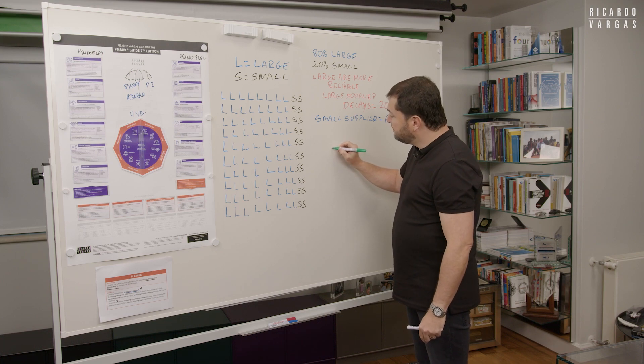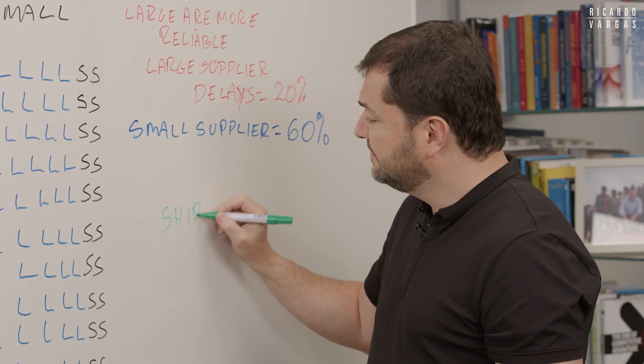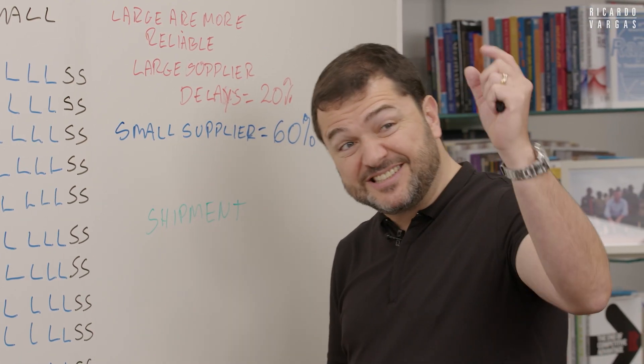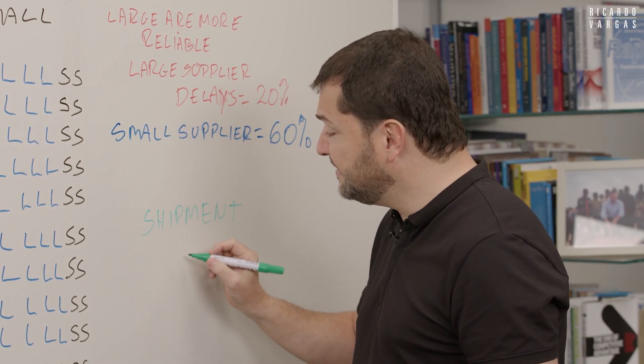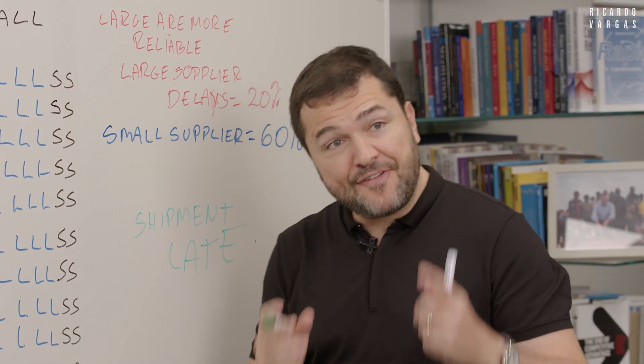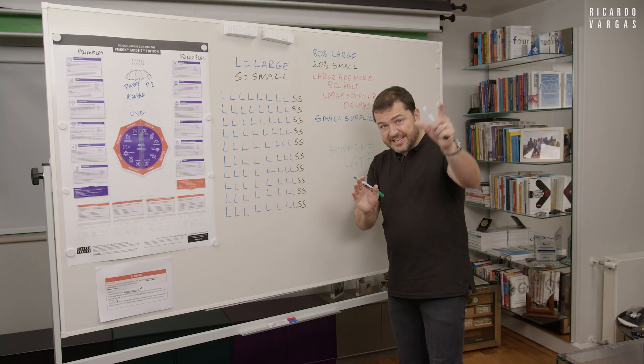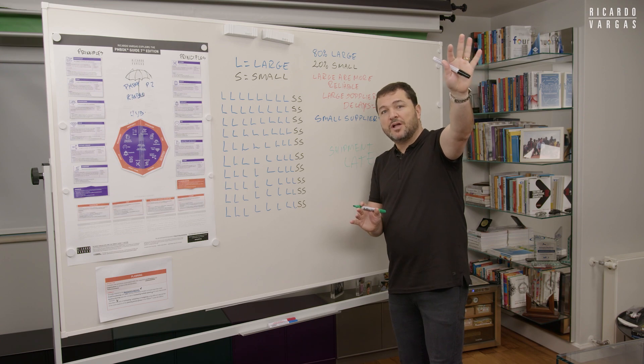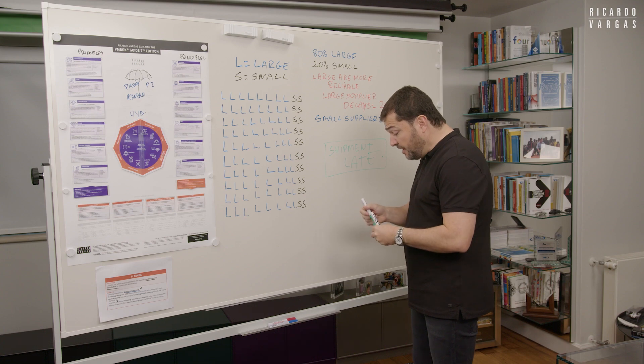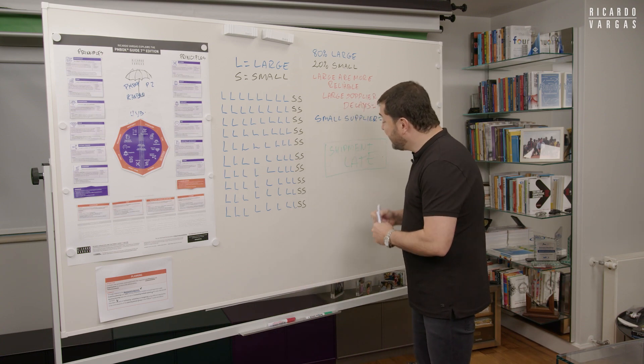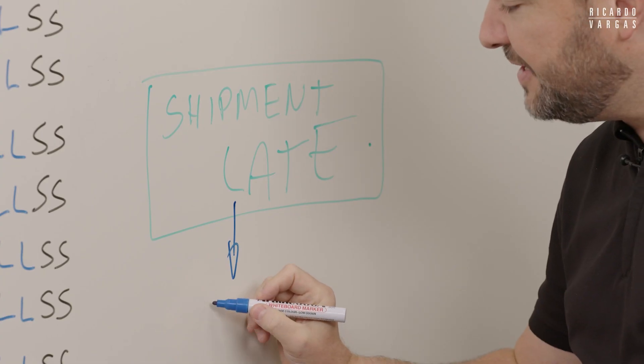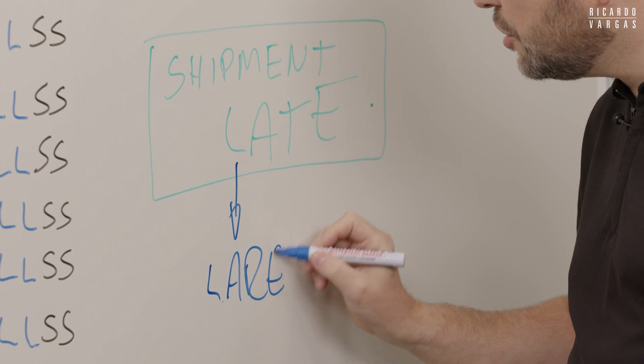I had a shipment. I just heard from the security that one shipment is late. This is a fact. This is something I know. Security, or for example, the logistic people told me, but they didn't tell me who is this company. And I want to know, what is the probability of this company to be a large company?